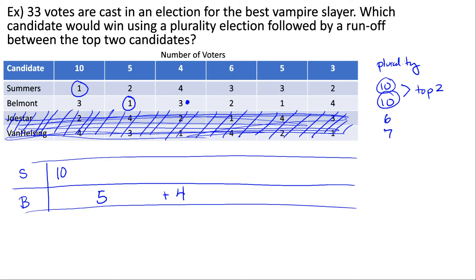The next column of six voters no longer have their first choice. They have to choose between their second and third choice, so they vote for their second choice — the one they prefer most out of remaining candidates — giving those six votes there. The next five voters still have their first choice, so they vote for it. The final three voters choose between their second and fourth choice, and they select their second choice, giving those three votes accordingly.